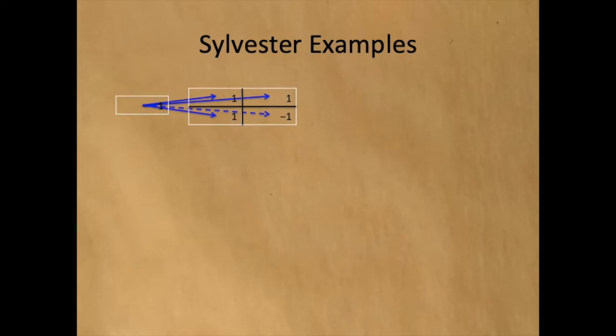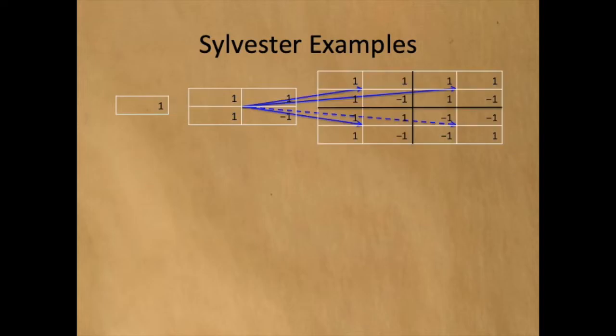The smallest Hadamard matrix is the 1x1 matrix that contains a 1. The 2x2 matrix is made by copying the 1x1 matrix 4 times and negating the bottom right corner. The 4x4 matrix is made by copying the 2x2 matrix 4 times and negating the bottom right corner.